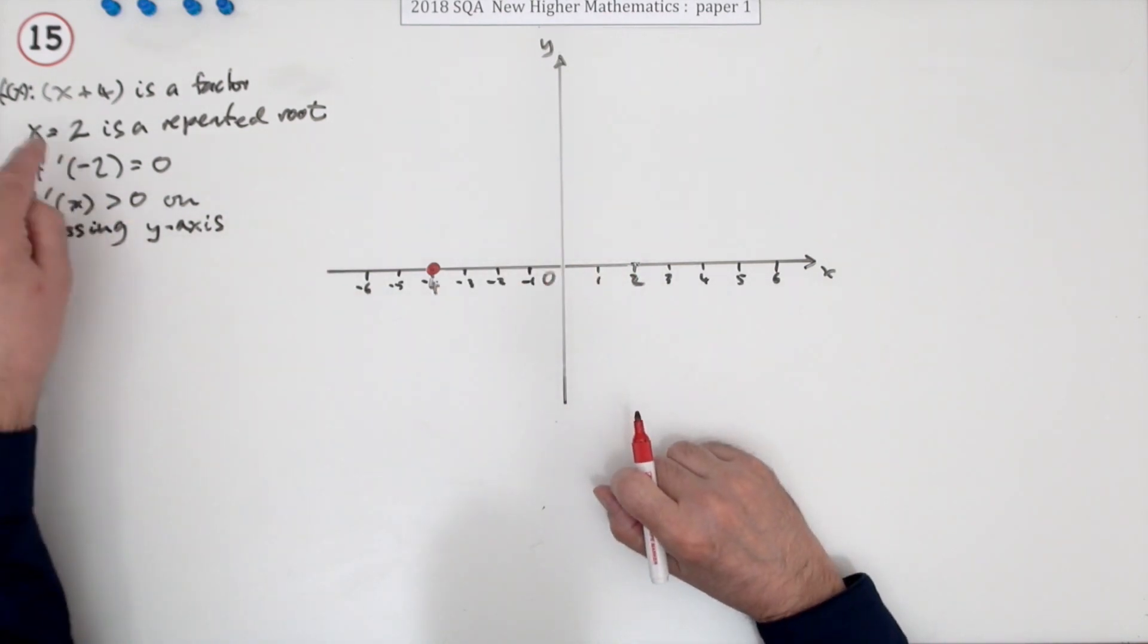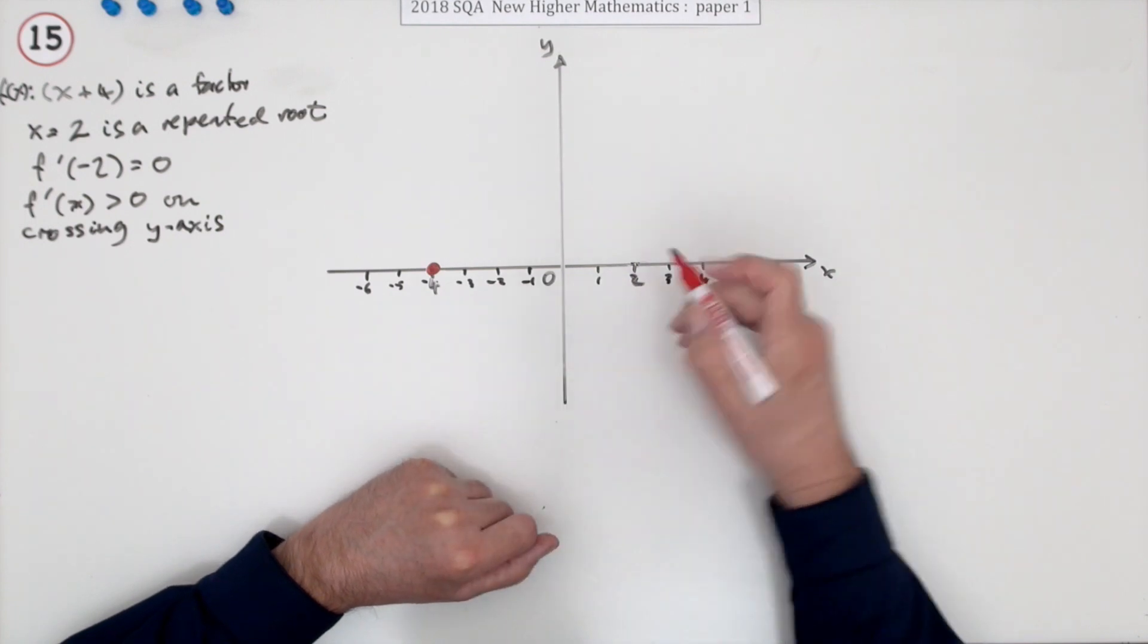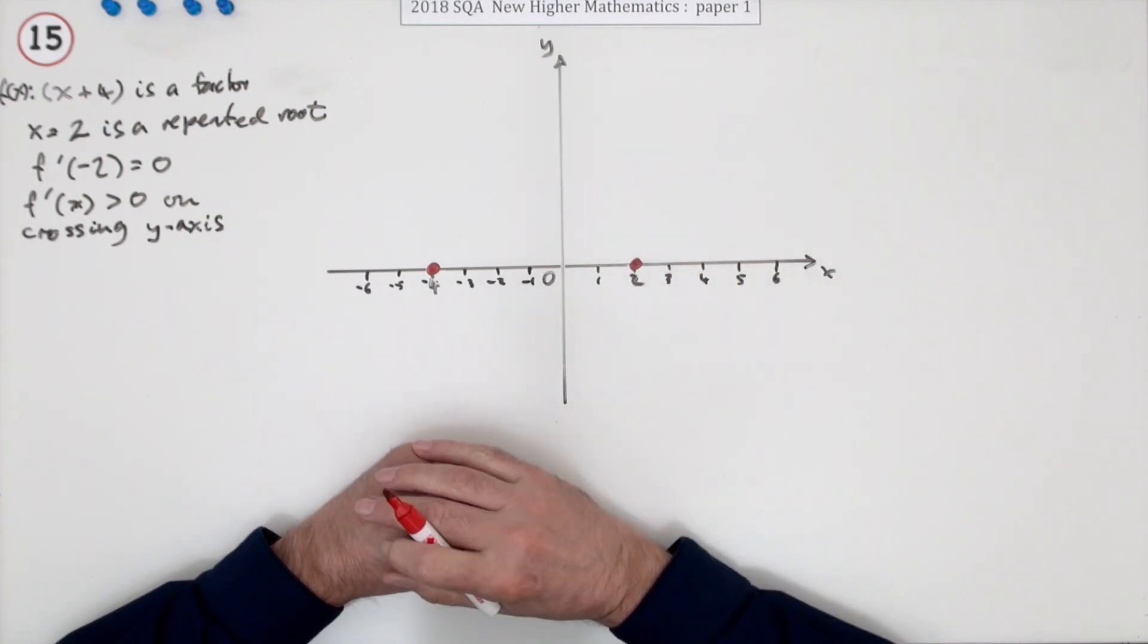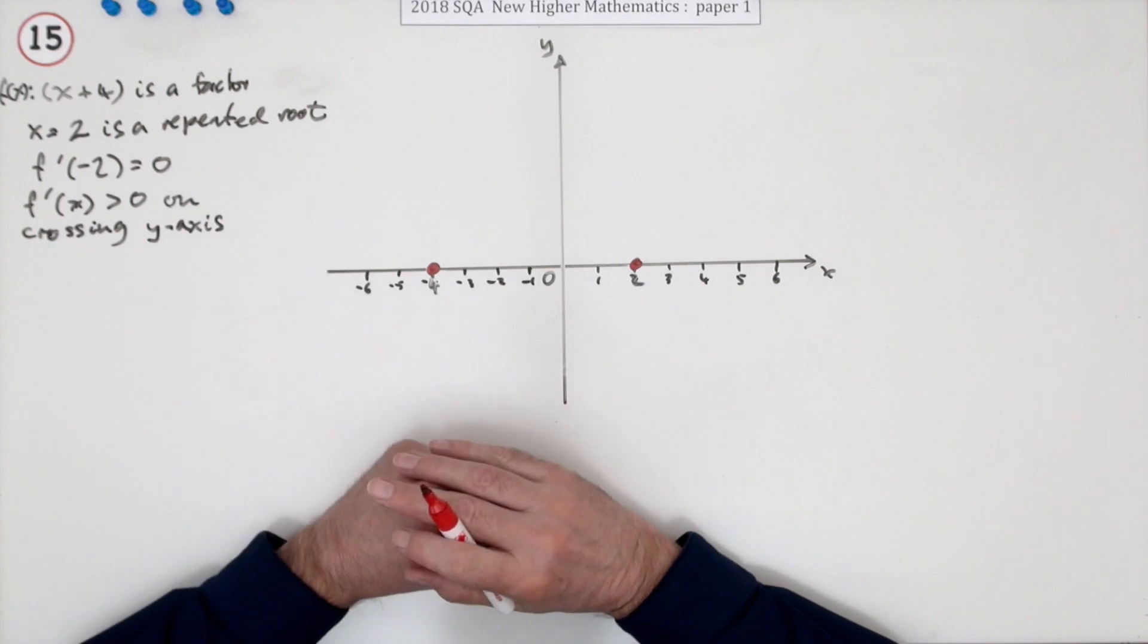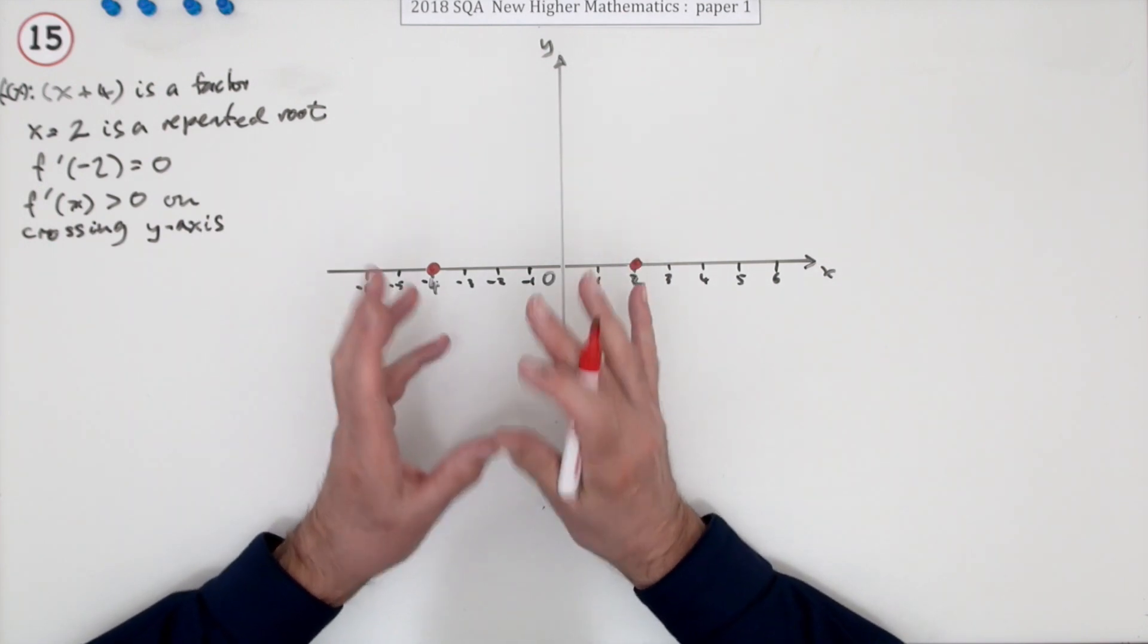There's another one. x equals 2 is a repeated root. So something happens at x equals 2. Again, it's a root. It's the root of the equation, so it gives the answer zero.